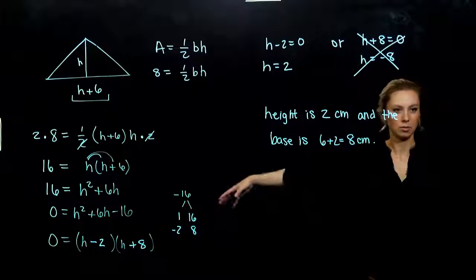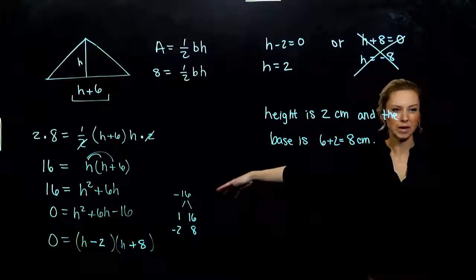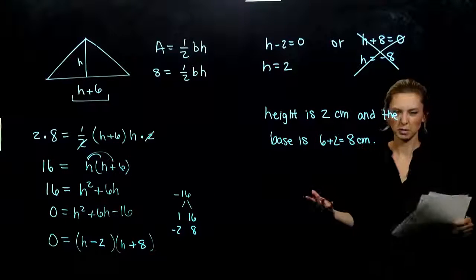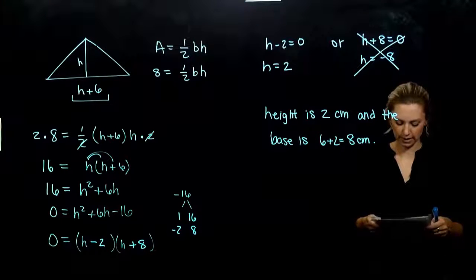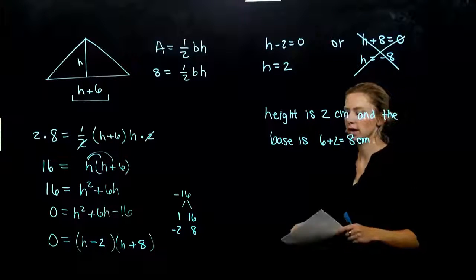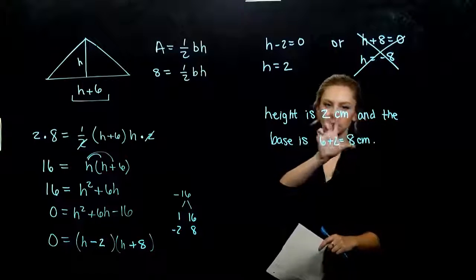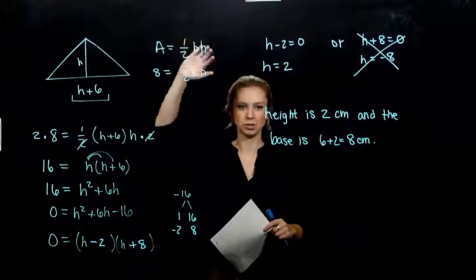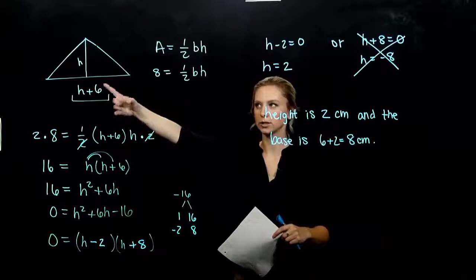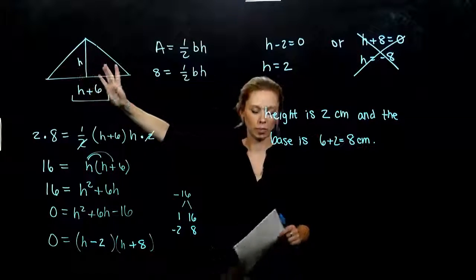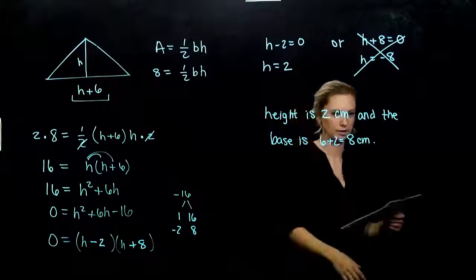Height is 2 centimeters and base is 8 centimeters — a really big wingspan with a short body, which makes sense for a butterfly. How can we check? Plug these values into the equation, make sure we get the correct area, and verify that the relationship between base and height holds true.